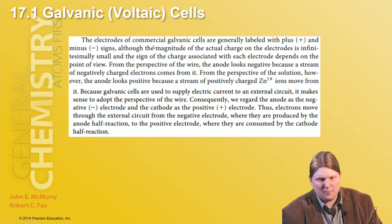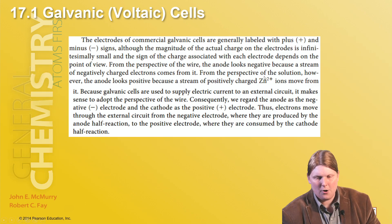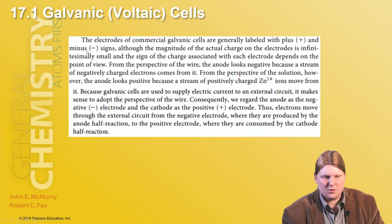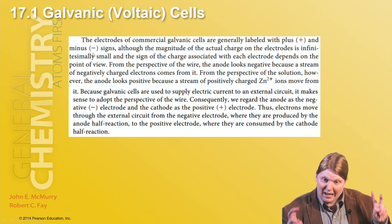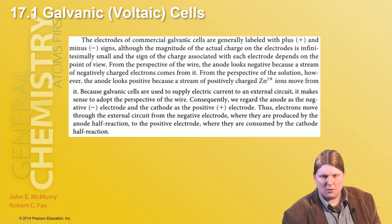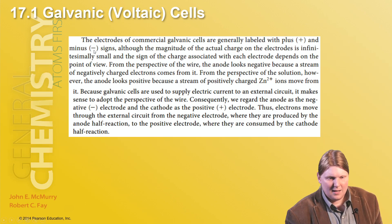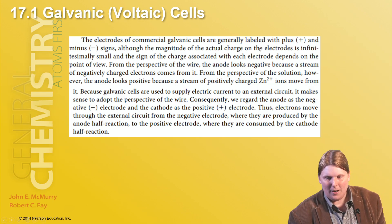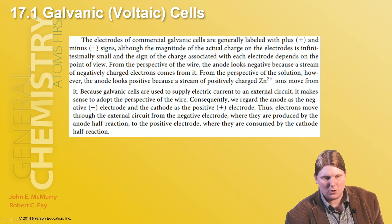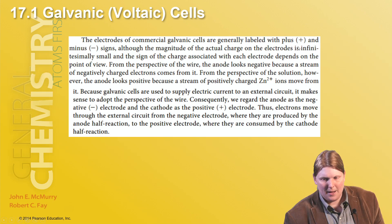When labeling the signs, the electrodes of commercial galvanic cells are typically labeled plus and minus — it's from the perspective of the wire, not the charge actually at that spot. In an electrochemical cell, electrons flow from the negative to the positive. The negative sign indicates the side where electrons come from, and the positive side indicates where they go to.